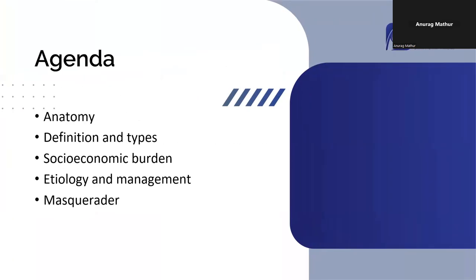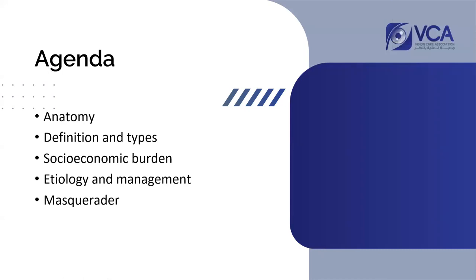For today's topic, the agenda will be: we will discuss the anatomy of conjunctiva, the various types and definition of conjunctivitis, why it is a big deal, and the socio-economic importance of conjunctivitis. We will also try to learn various important etiologies and their management. At the end, we will discuss certain conditions called masqueraders because they mimic conjunctivitis but they are not conjunctivitis.